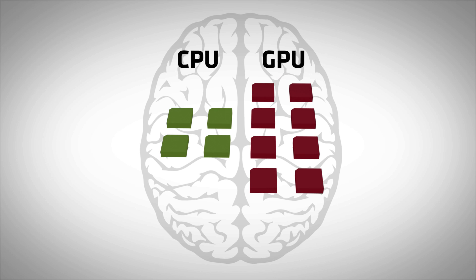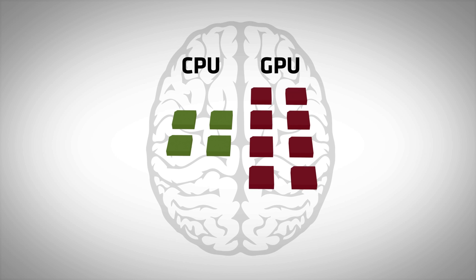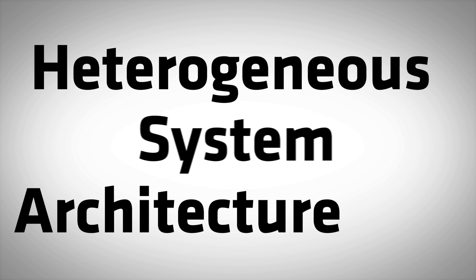The two different processing units in an APU working together like the human brain is enabled by heterogeneous system architecture, or HSA.